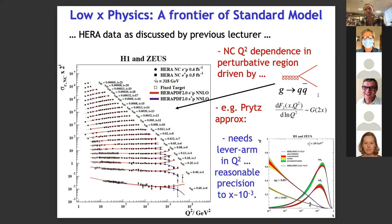In the lowest-order approximation, there's a nice approximation from Prytz which basically says that the gluon at 2x is the logarithmic Q²-derivative of the cross section at x. So you can see the slope — the logarithmic slope in Q² — is exactly how you get the gluon. There is a reasonable lever arm in the HERA data, down to about x of 10⁻³, which is what gets you to the sorts of plots of the parton densities.